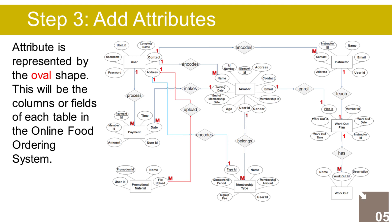The Menu entity has the following attributes: ID (Primary Key, represented with underline), name, price, type ID (Foreign Key), image, ingredient, and status. The Menu Type entity has the following attributes: ID (Primary Key, represented with underline), type name, and description.